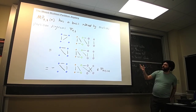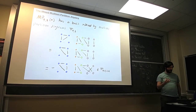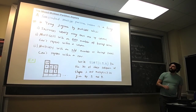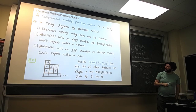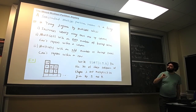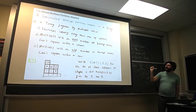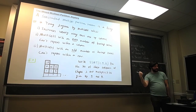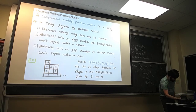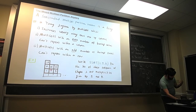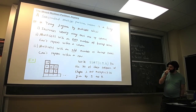So we have these multiset partition diagrams that describe the basis for the centralizer algebra. A semi-standard multiset partition tableau is a filling of a Young diagram by multisets that increases weakly along rows and up columns. Multisets with an even number of barred values can't repeat within a column, and multisets with an odd number of barred values can't repeat within a row. So multisets with zero barred elements can repeat within a row but not in a column; multisets with one barred element can repeat within a column but not in a row.